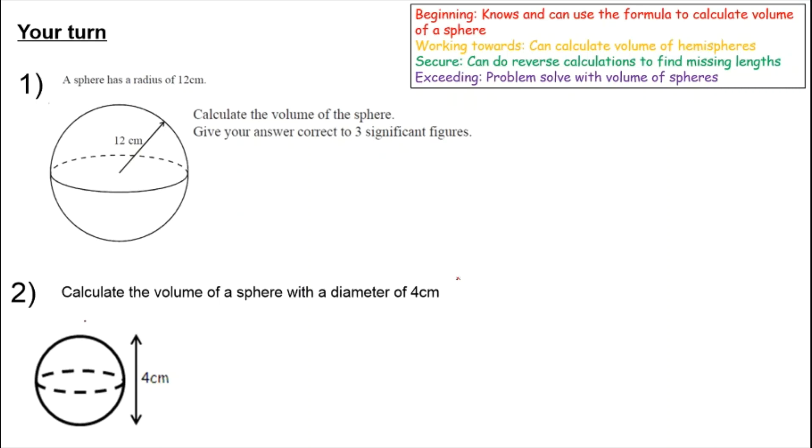Here are two questions. Have a quick go at them. You can pause it here and then unpause it for the answers. The first one, you should have got 7,240 if you rounded it to three significant figures. The second one, calculate the volume of a sphere with a diameter of 4. Well, the formula we're using requires the radius. So if the diameter is 4, the radius must be 2. So you do 4 thirds times pi times 2 cubed, which should give you about 33.5. Don't forget it is a radius, and they may well give you a diameter in a test to justify the two to three marks you're going to get for this. Watch out for that.